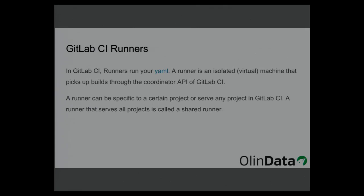GitLab CI runners are machines or environments that run your builds. There are many different types of runners, but basically a runner is some kind of environment that picks up builds from GitLab CI through the internal APIs. A runner can be specific to a project — for instance, if you have code that only works on Windows, you'll have a Windows runner — or it can serve any project. We'll see later how to determine which projects run on which runners.